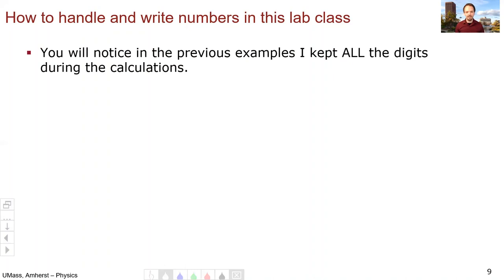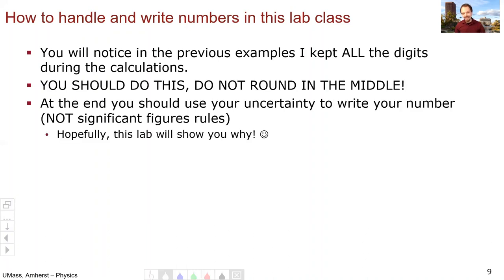So this is actually connected to how you should handle and write numbers in this lab class. And you might be thinking yourself, wait, how is this at all connected? Well, here's how. So you'll notice in the previous example, I kept all the digits during the calculations. You should always do this. Never round until the end. That's just in general good practice for any course. Then at the end, you should use your uncertainty to write your numbers and not some significant figures rules. Hopefully this example and this lab will show you why.